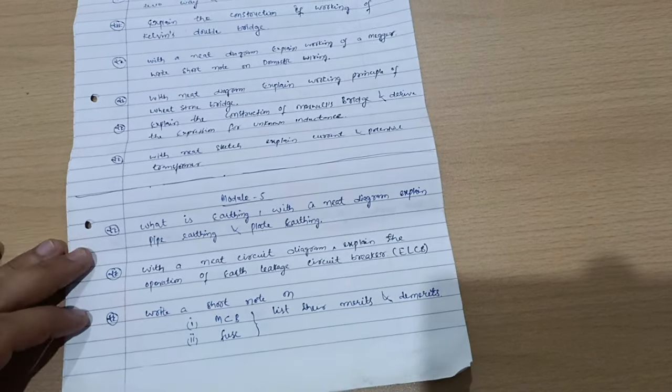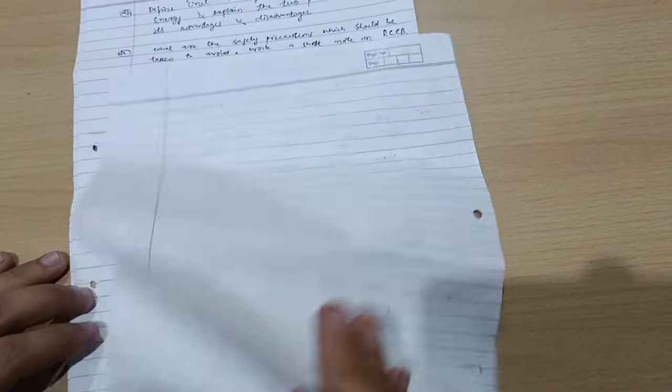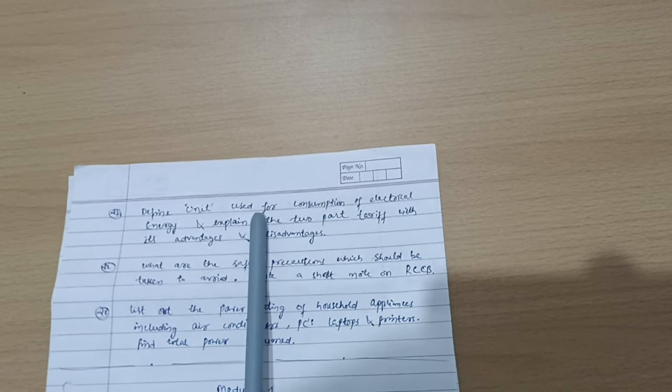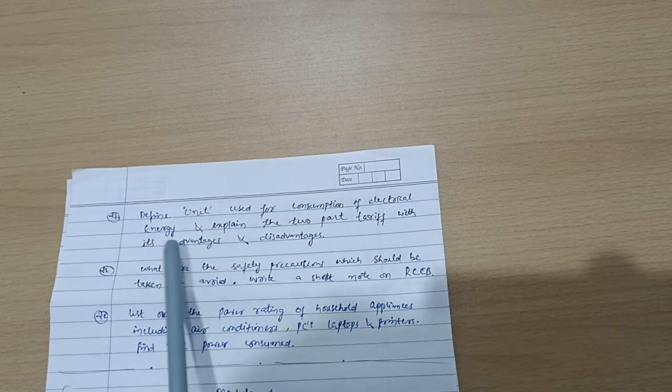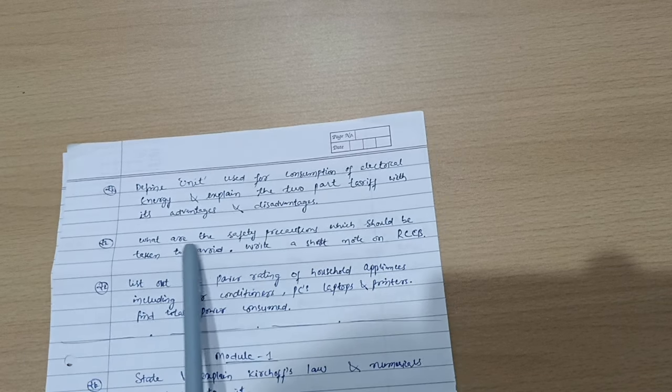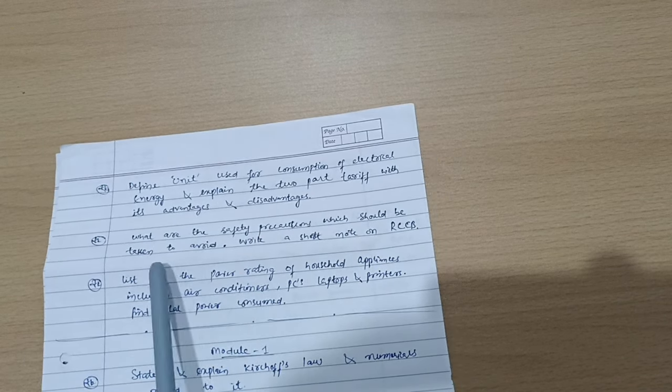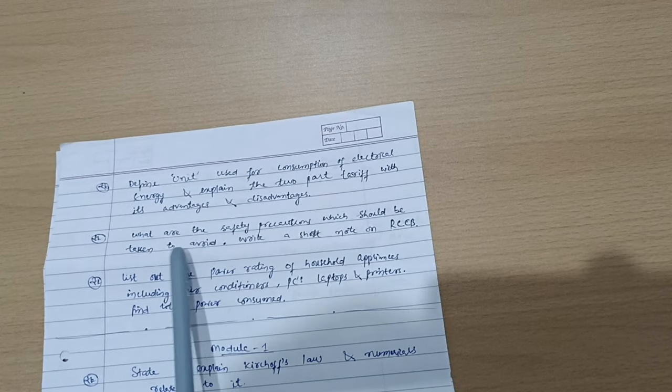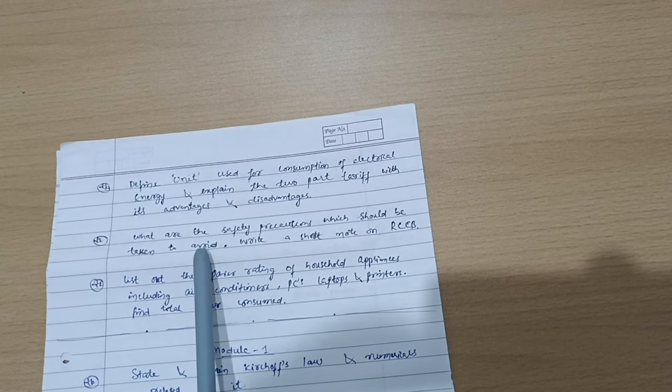List their merits and demerits. Sometimes they will ask you for the structure also. With a neat diagram, explain MCB. Next, define unit and state the laws for consumption of electrical energy and explain the two-part tariff with its advantages and disadvantages.